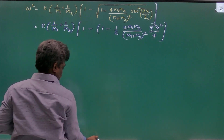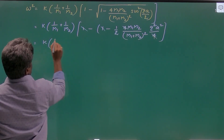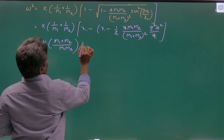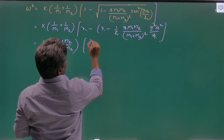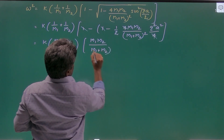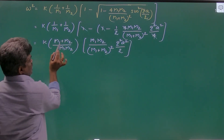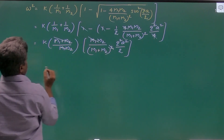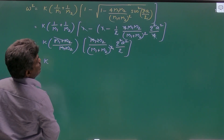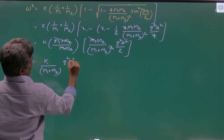The 1s get cancelled, the 4s get cancelled, and finally we get k times (m1+m2)/(m1m2) times m1m2/(m1+m2)² times q²a²/2. So we can cancel m1+m2, and m1m2 gets cancelled, so finally omega squared equals k/(m1+m2) times q²a²/2.